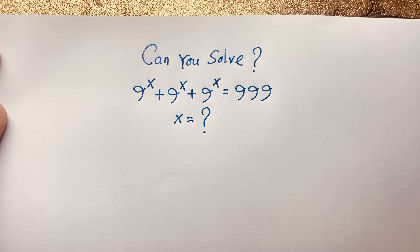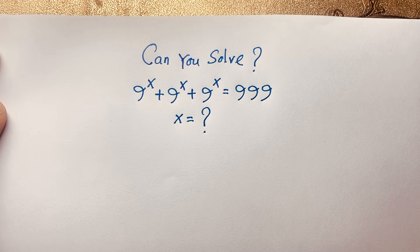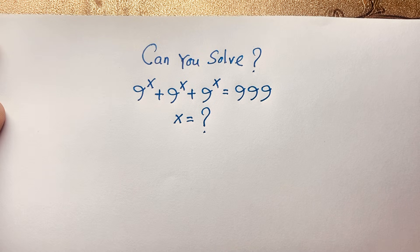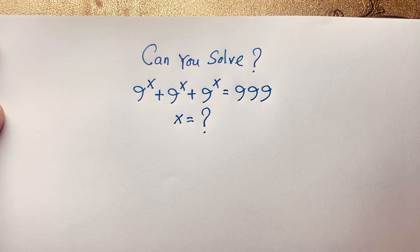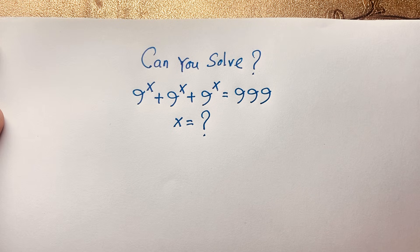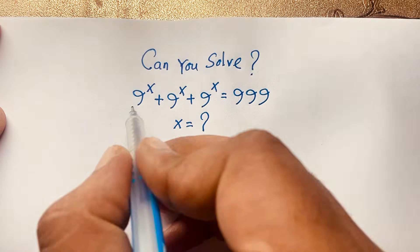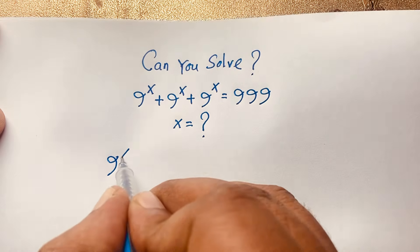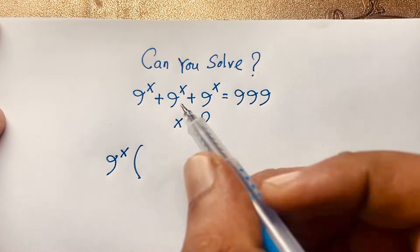9 to the power x plus 9 to the power x plus 9 to the power x is equal to 999. Hello everyone. How to solve this question? It is a nice exponential expression, and in this expression you can see easily that 9 to the power x is common.